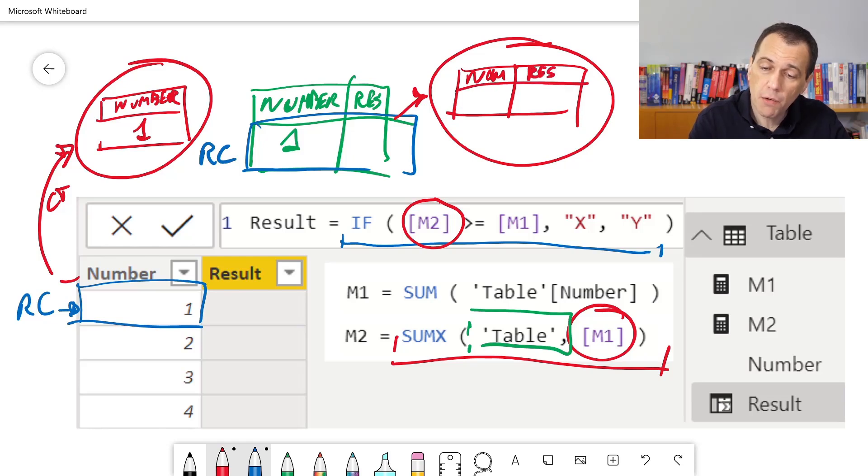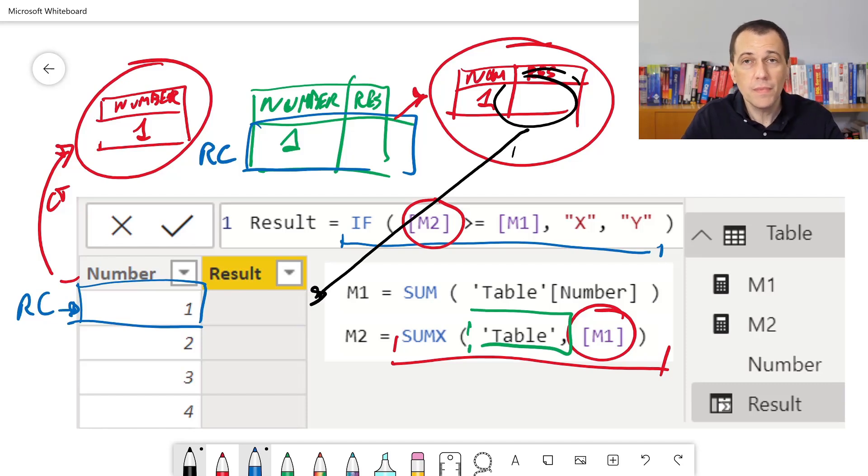Now, what is the problem? We know the value of the number, but we have to compute result. But result is the new calculated column we are trying to compute here. This is the source of the circular dependency.